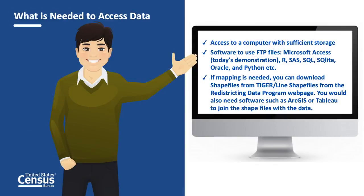Because there are four large files for each state, downloading and storing the redistricting data files from the FTP site will require computers with sufficient storage capacity. You will need a software package that has the capability to extract the data from the FTP site, combining the spatial and tabular data. There are several options, but R, SAS, and Microsoft Access are just a few.